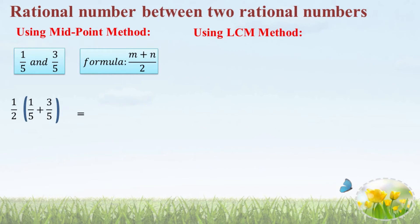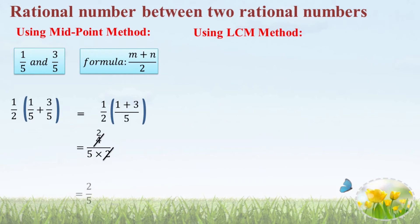We substitute 1 by 5 and 3 by 5 in place of M and N. We have to add these two first, then divide by 2. Simplifying inside the bracket, we get 1 plus 3 by 5. Since denominators are common, we write 5 once and add the numerators: 1 plus 3 gives 4 by 5. Dividing by 2, we get 2 by 5. Therefore, the rational number 2 by 5 exists between 1 by 5 and 3 by 5.